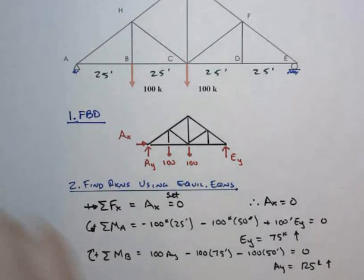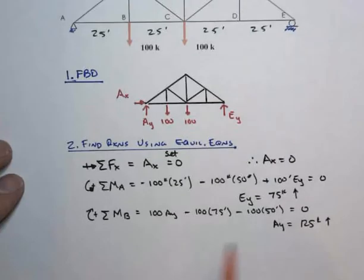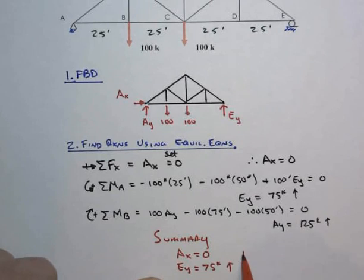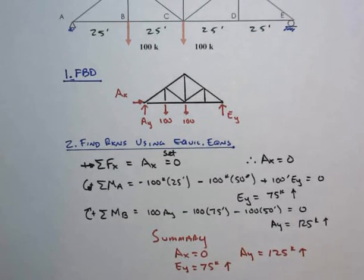It's always good to come back now and summarize this in a nice, clean way that we have AX equals zero, we have EY equal 75 kips acting up, and we have AY equal to 125 kips also acting up.